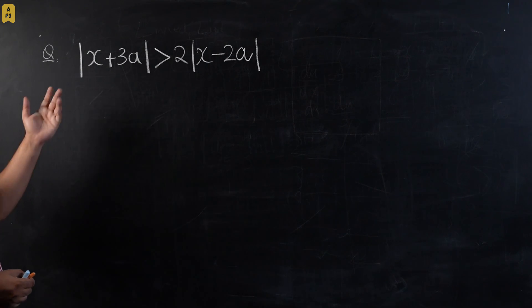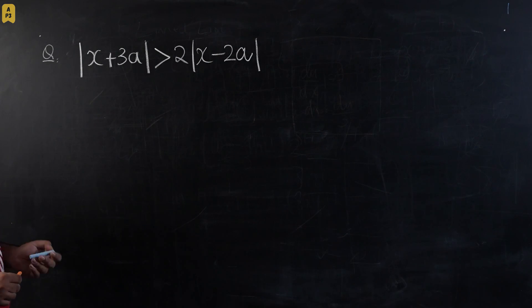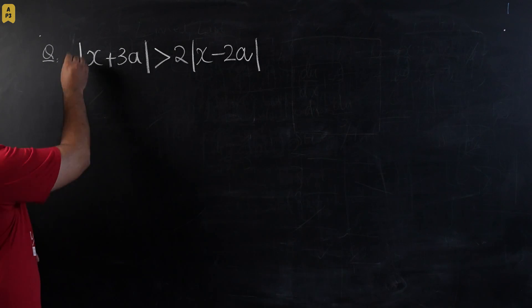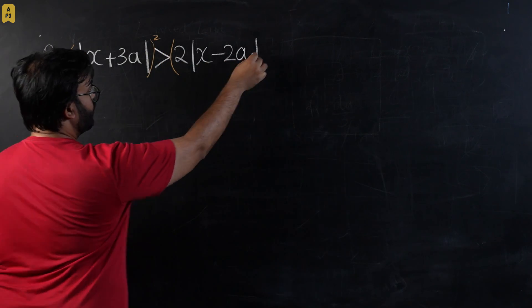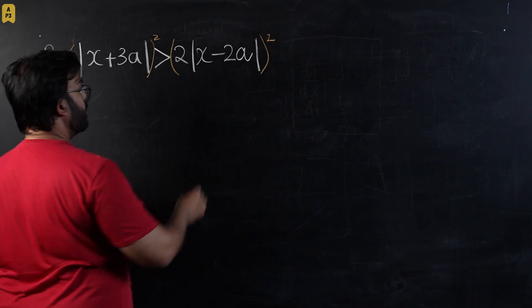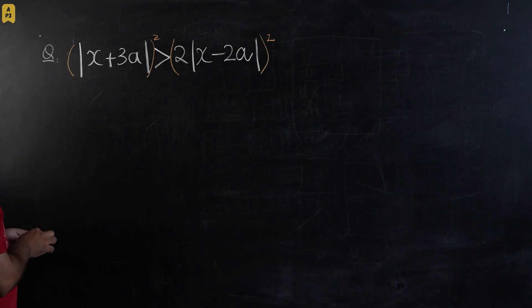Let's start. Whenever we have modulus on both sides of the equation and we have an inequality, what we do is we tend to put squares on both sides. So let's square both sides and modulus function will go away.